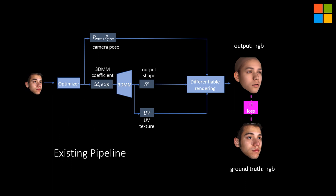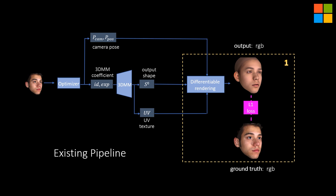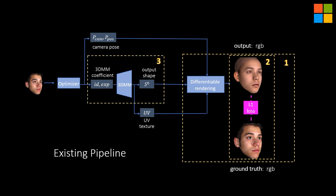In most recent 3D face reconstruction frameworks that use the analysis-by-synthesis paradigm, the differentiable renderer is a key component. However, the rendering process mostly utilizes z-buffer, which is not truly differentiable. Second, existing works heavily rely on color information or photometric loss as a constraint, which by itself has ambiguities.